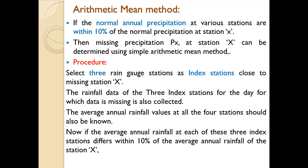For both methods, the normal annual precipitation of station X — the missing station — is collected, as well as the normal average precipitation of the index stations. These are then compared. If the normal annual precipitation at various stations are within 10% of the normal precipitation at station X, then the missing precipitation Px at station X can be determined using the simple arithmetic mean method.